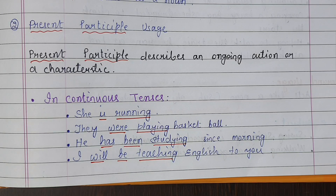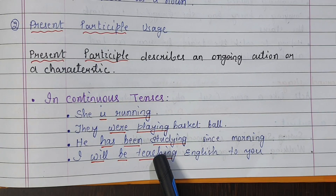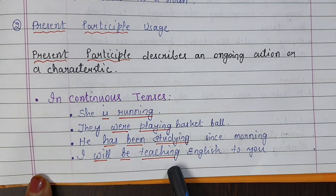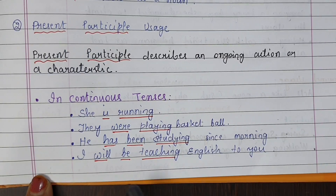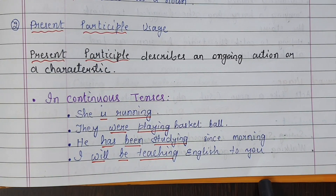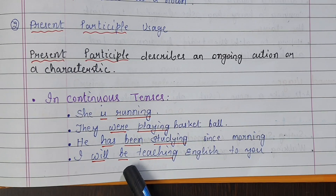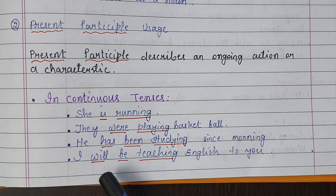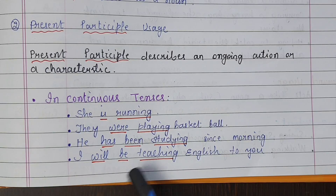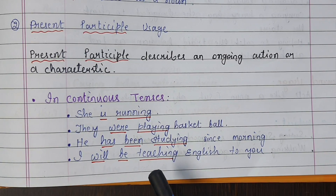'He has been studying since morning.' Has been studying — present perfect continuous. In present perfect continuous, we use present participle. 'I will be teaching English to you.' Will be teaching — will be expresses future, be plus the ing form of a verb. This is future continuous. Teaching is present participle.